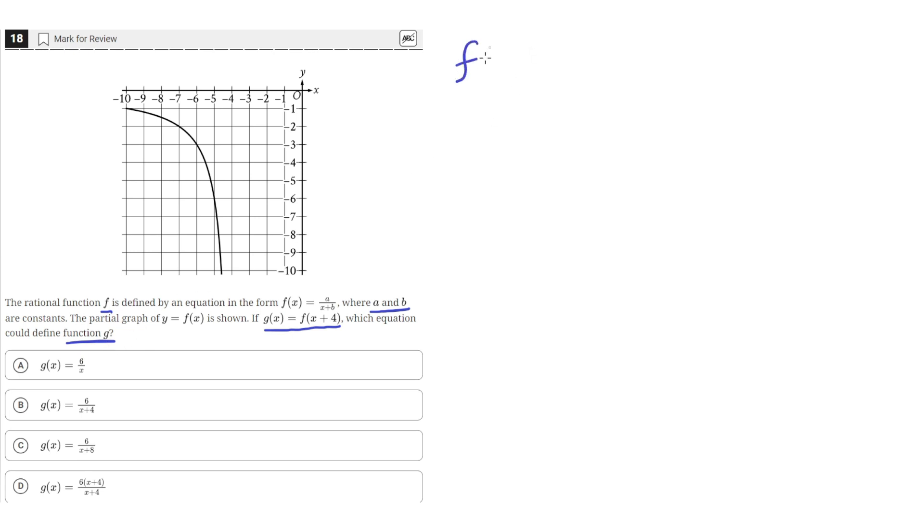We're given that the equation of f(x) is of the form a over x plus b. Let's find the values of a and b. We can do that by choosing two points on the graph of f(x). Let's choose these two points here, which are negative 7, negative 2, and negative 6, negative 3.